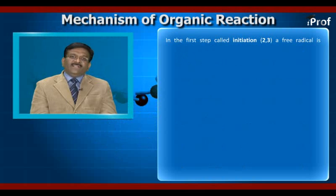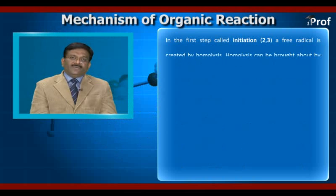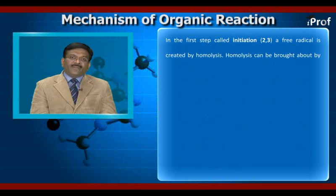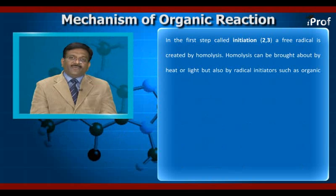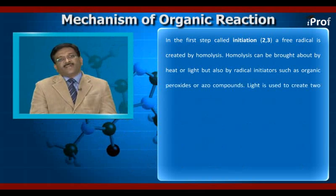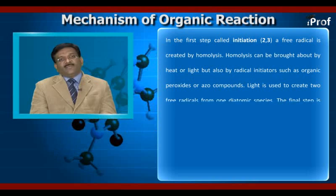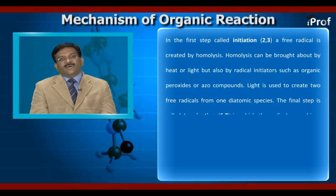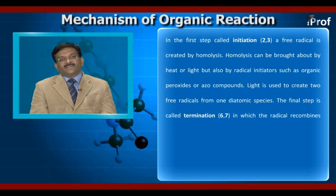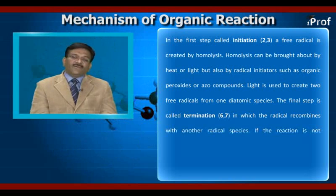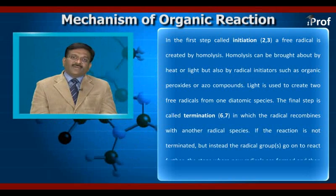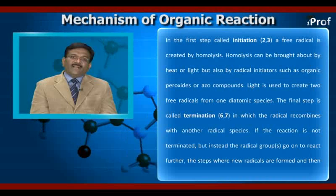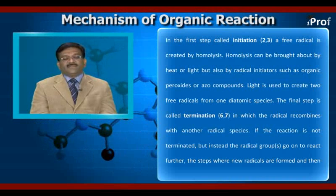In the first step, called initiation, a free radical is created by homolysis. Homolysis can be brought about by heat or light, but also by radical initiators such as organic peroxides or azo compounds. Light is used to create two free radicals from one diatomic species.